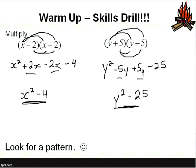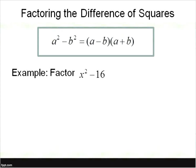We're going to look at factoring the difference of squares. When we factor the difference of squares, you get a perfect square minus another perfect square. 'Difference' means subtraction and we have two perfect squares — that's why we call this the difference of squares. Whenever you have the difference of two perfect squares, you can simply write out two sets of parentheses: the square root of the first term minus the square root of the second term, times the square root of the first term plus the square root of the second term. It's actually one of the easiest ways to factor.